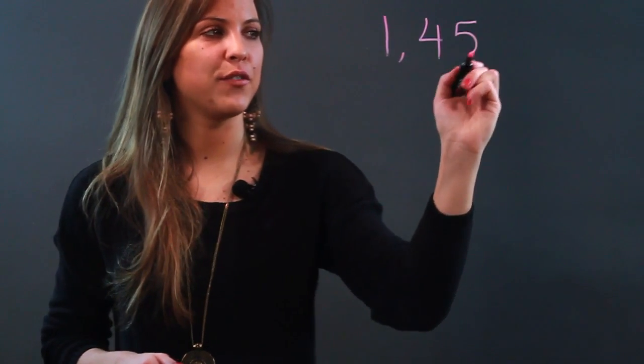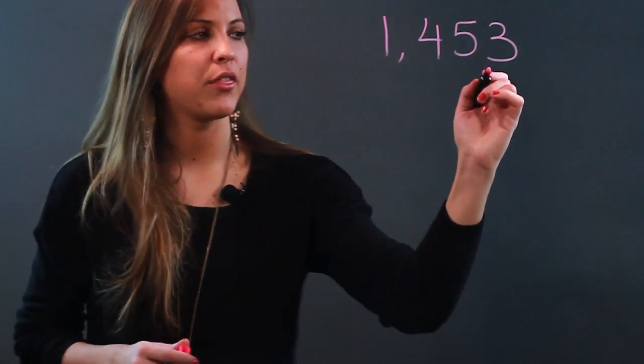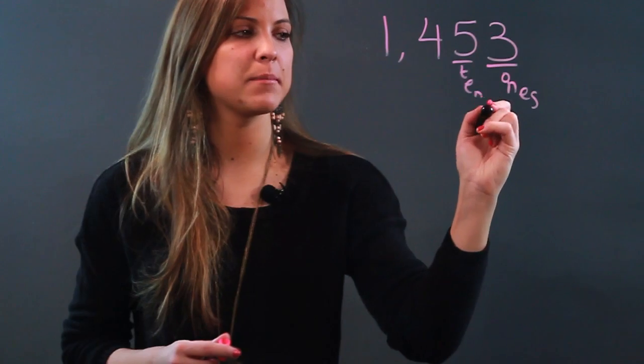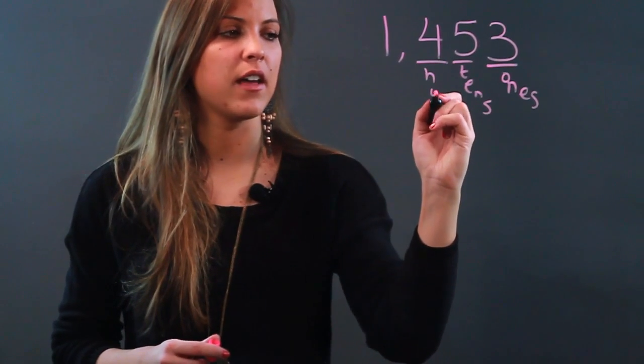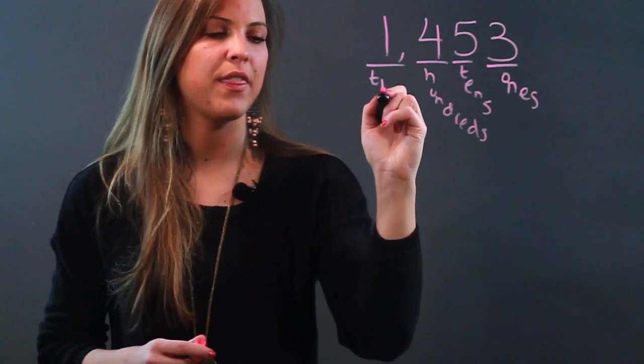So if I have the number 1453, what I need to know first is all my places. So my 3 is in the ones place, my 5 is in the tens place, my 4 is in the hundreds place, and my 1 is in the thousands place.